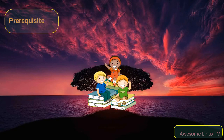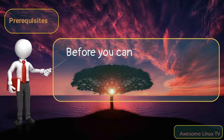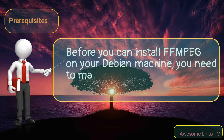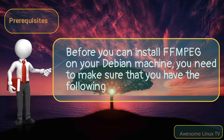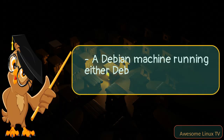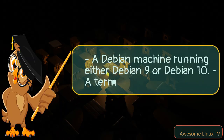Prerequisites. Before you can install FFmpeg on your Debian machine, you need to make sure that you have the following: a Debian machine running either Debian 9 or Debian 10, and a terminal with sudo access.